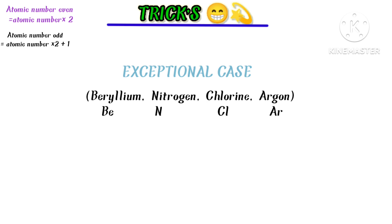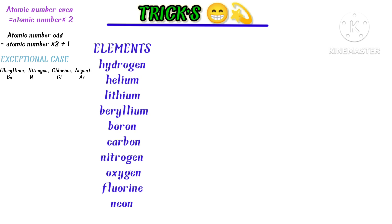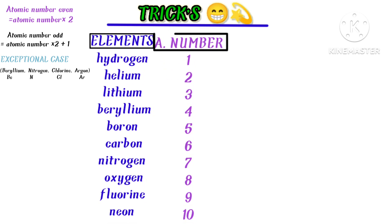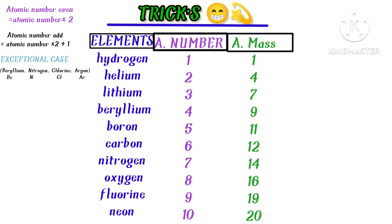Let's start. Here are 10 elements with their atomic numbers. First, for hydrogen, the atomic number is 1 and its atomic mass is also 1. Now for helium — the atomic number is 2, which is even, so we apply the first trick: 2 into 2 equals 4. So helium has atomic mass number 4.